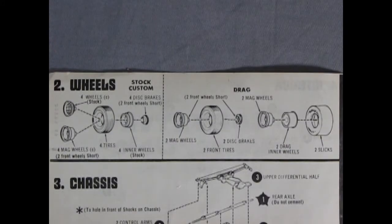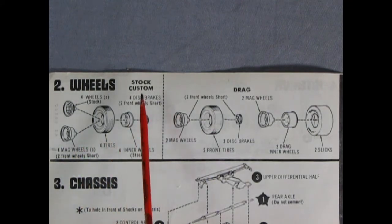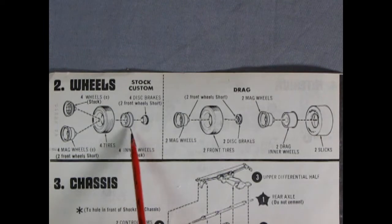And now to move you down the street faster than the Bay City Rollers. We have our wheels and tire combination. Here we have stock and custom, which includes four disc brakes, four wheel inners, four tires, and four stock or four mag wheels.